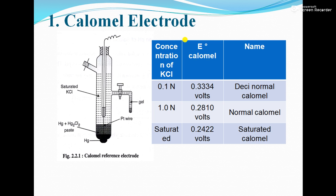You can see the diagram — at the bottom there is mercury, then a mixture of mercury and mercurous chloride, and a platinum wire dipped in that solution. Then there is a saturated KCl solution, and a gel that acts as a salt bridge. Calomel is the ore of mercury, that is Hg₂Cl₂.